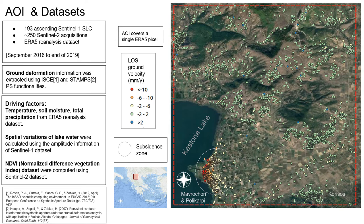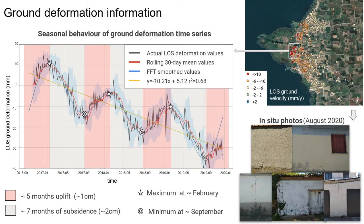At the bottom left of the AOI we can identify the subsidence zones denoted with a circle, located at Mavrochori and Polycarpi villages. At this subsidence zone, and especially closer to the lake water which is denoted with a white box, a clear seasonal behavior of ground deformation is observed. The linear subsidence rate of 1 cm per year seems to have significant impact on buildings according to our in-situ photographs.